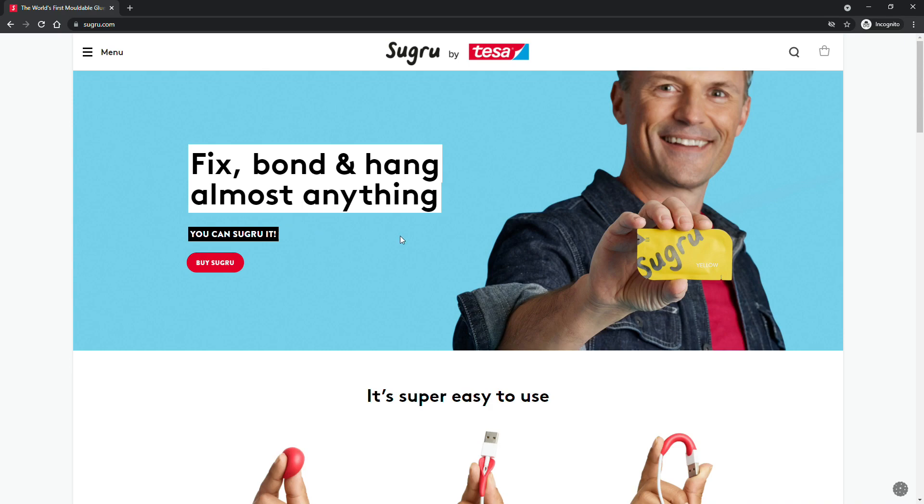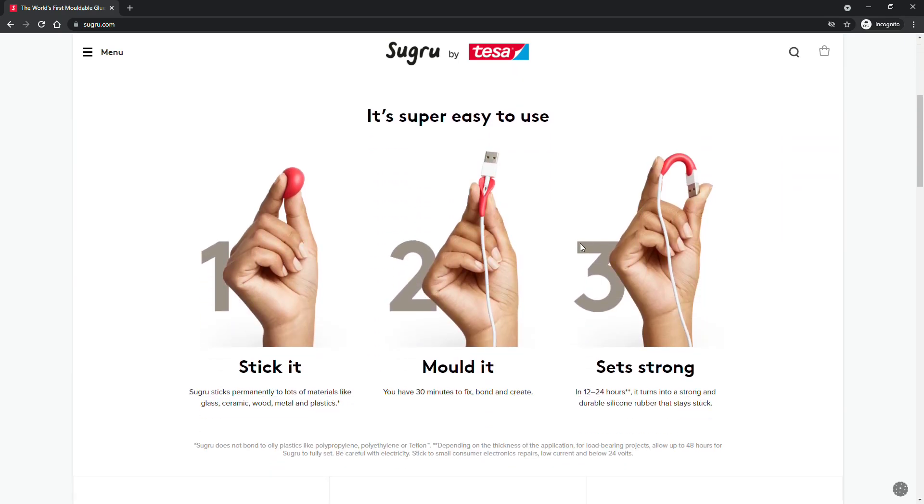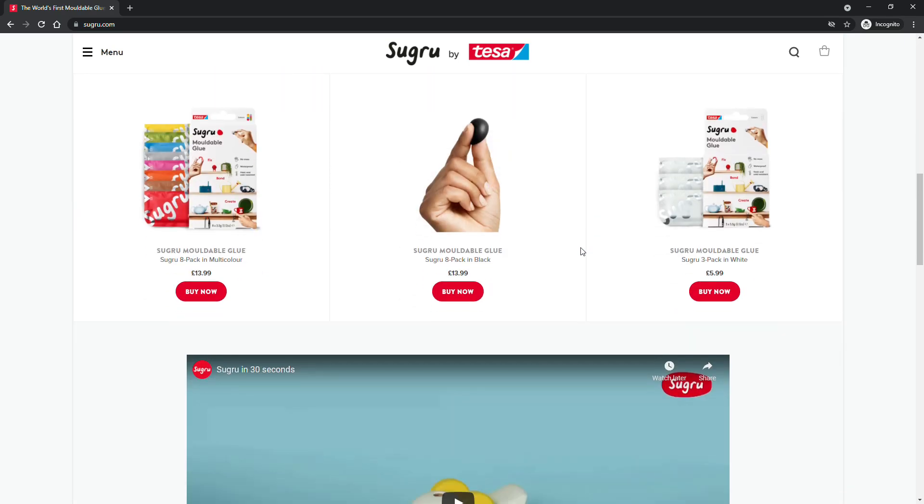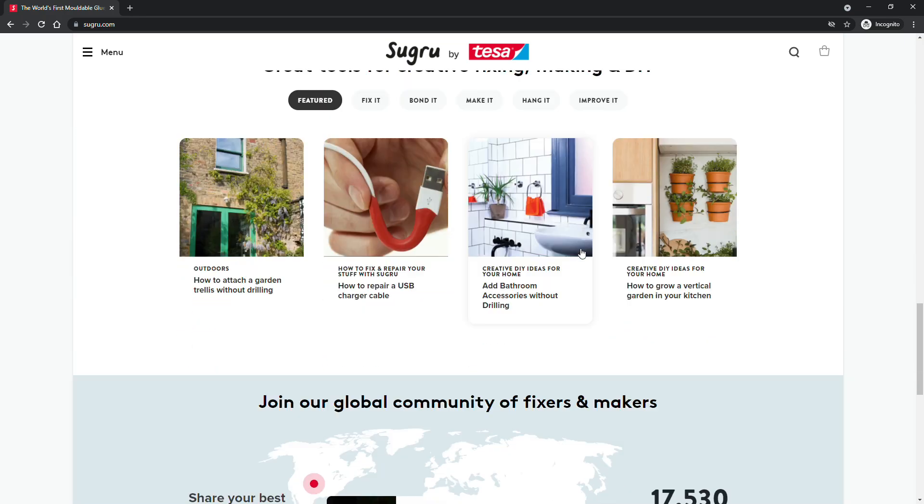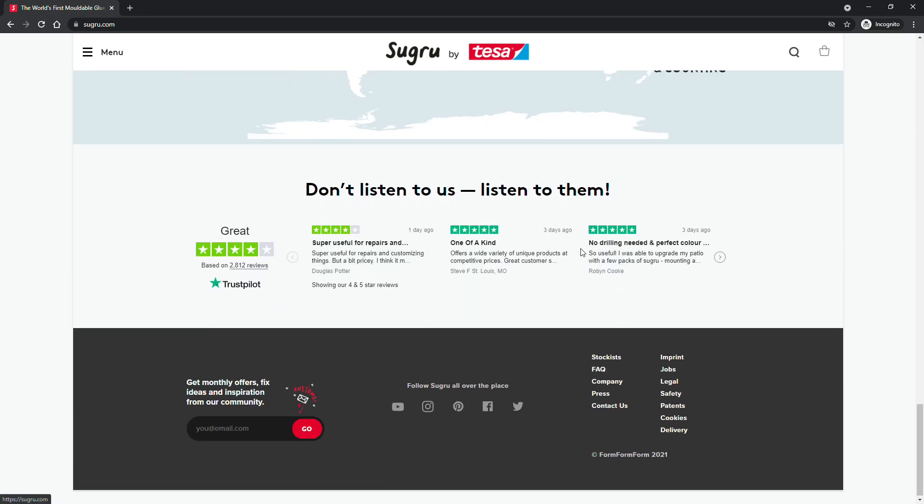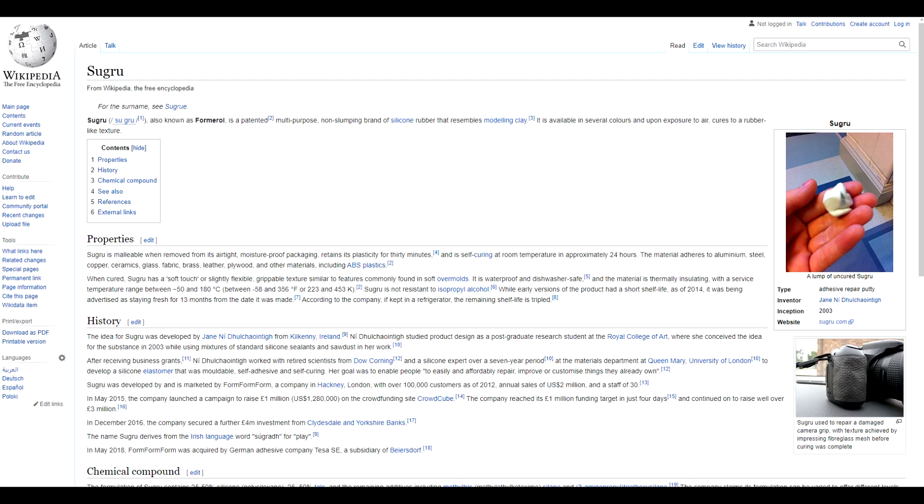For those of you who don't know what Sugru is, it's a silicone formulation that air cures. It's kind of like bathroom sealant, but also nothing like bathroom sealant. For one, it doesn't stink, it doesn't really smell much at all. But also, its texture is more like plasticine when you're working it.